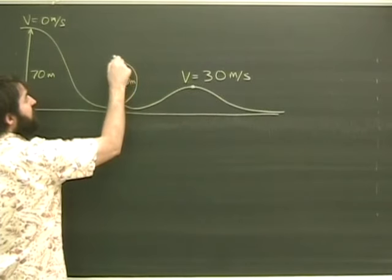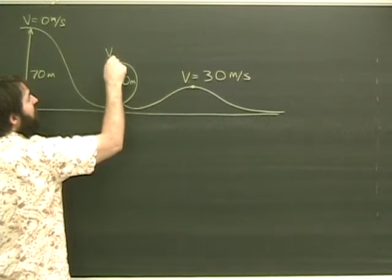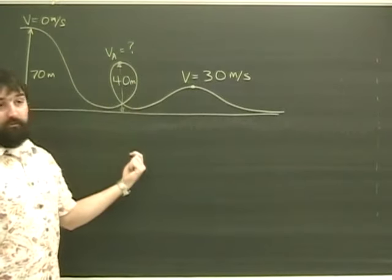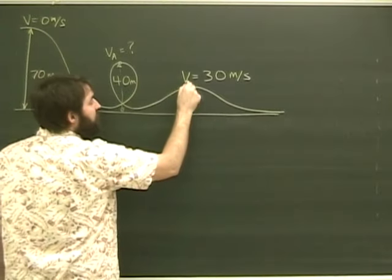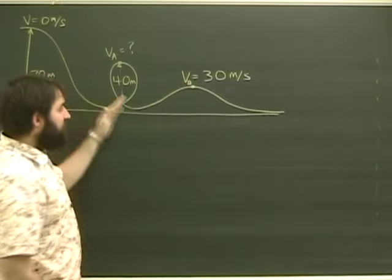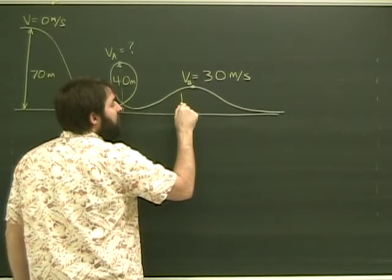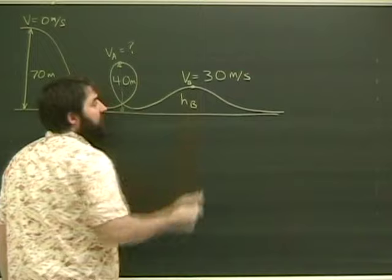First of all, at this point, which I'm going to call point A, what is its speed as it goes over the top of the loop? And part B we'll say is over here. When it goes over a small hill, its speed is 30, and the question is, what is the height of the hill?